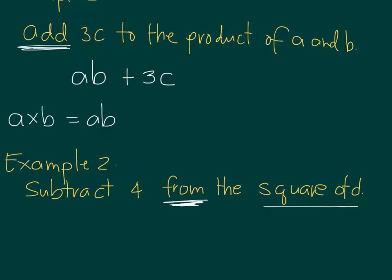From the square of D, this is how we translate: from the square of D, we have to subtract 4. So do not translate statements without understanding it fully. Some people would translate this in the form of 4 minus D square. Now this is wrong because it says subtract 4 from. So we start with D squared and we subtract 4 from it. So we have D squared minus 4.